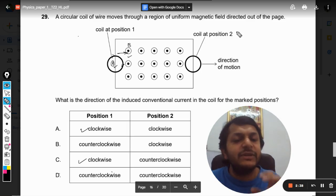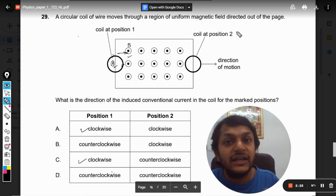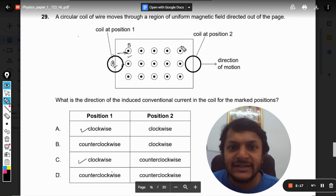So the induced current will be such that it will like to increase the magnetic field, increase the flux. So the flux is outside, so the direction of induced current in this ring will be such that the magnetic field due to induced current should be coming out of the board in the same direction.